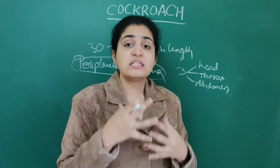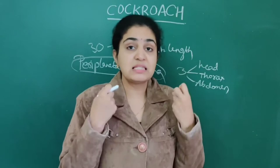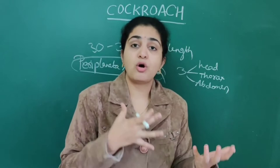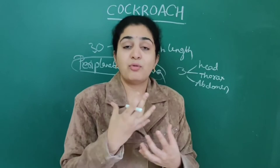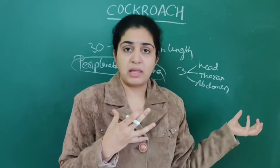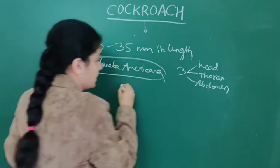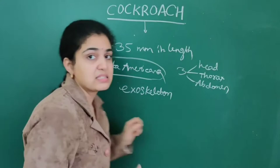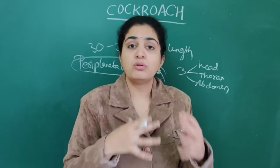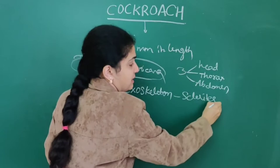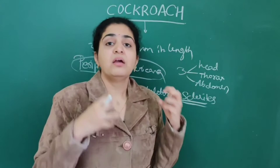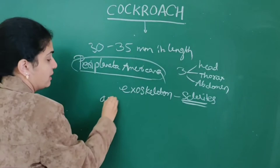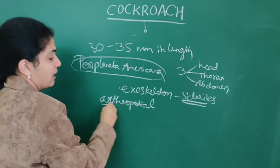The outer layer of the cockroach is covered by an exoskeleton. This exoskeleton consists of hard structures called sclerites. When you touch a cockroach, you feel a hard structure — that is the sclerites. These sclerites are connected to each other by a membrane called the arthropodial membrane.